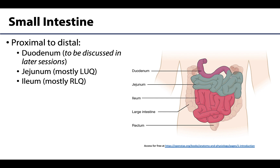Let's start with the small intestine, occasionally referred to as the small bowel if only talking about the jejunum and the ileum. From proximal to distal, the small intestine is divided into three parts. The most proximal and shortest is the duodenum, which we will discuss in a later session alongside the closely associated pancreas. Intermediate is the jejunum, located mostly within the left upper quadrant, and the most distal and longest portion is the ileum, which transitions into the cecum at the ileocecal junction.